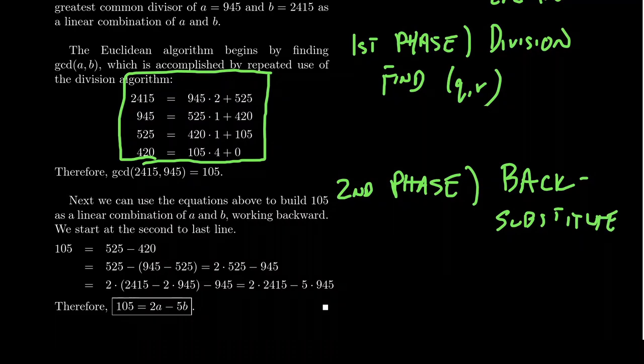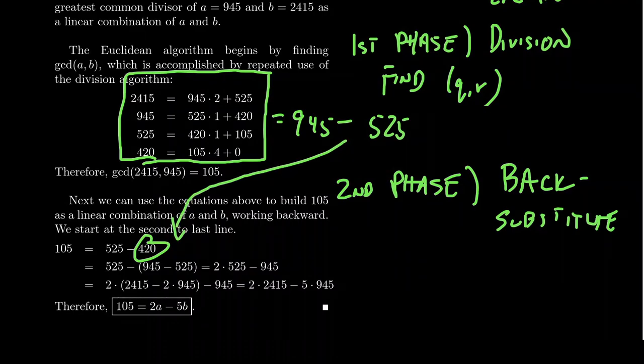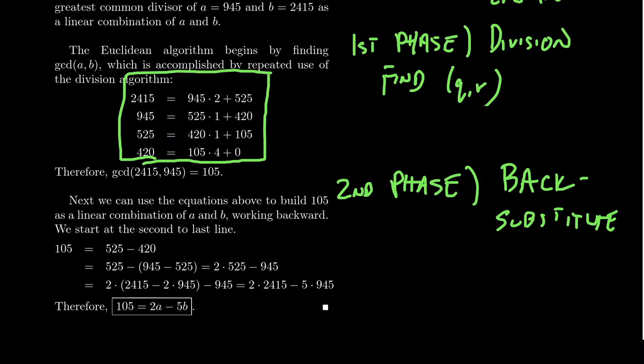So if you take, for example, the previous equation, so you don't do the last equation. The last equation tells you who the GCD is. The equation above that will, of course, have that GCD. Solve for the remainder in that situation. So you're going to get that 105 when you solve for it in this equation. That's equal to 525 minus 420. Now 420 was the remainder of the previous equation. Solve this equation for 420. That would give us 945 minus 525. And you're going to substitute that in for 420. When you do that, you get the following expression right here. 525 minus 945 minus 525. You can notice there's 525s here. You can combine those together. And you're going to get 2 times 525 minus 945.